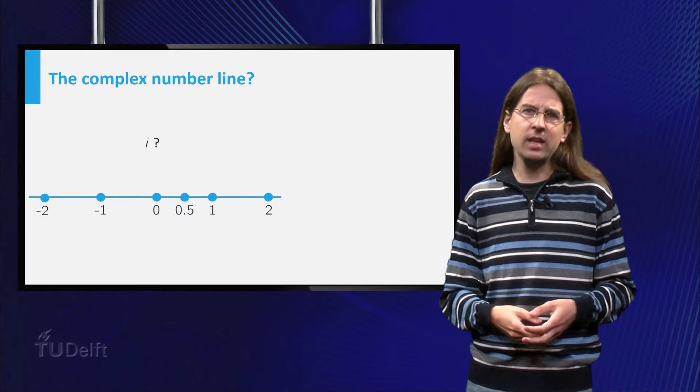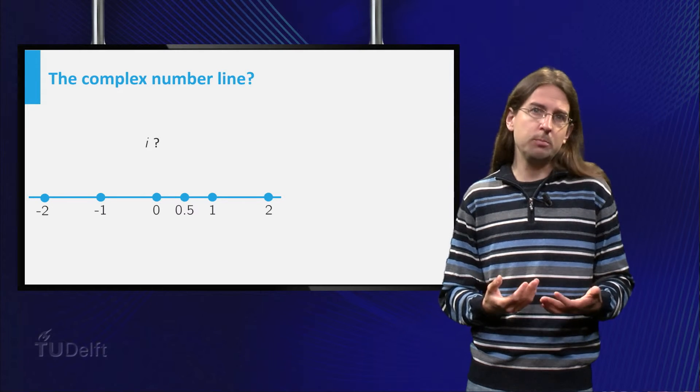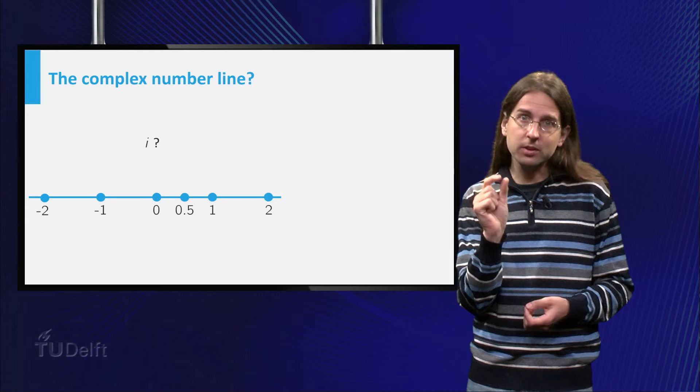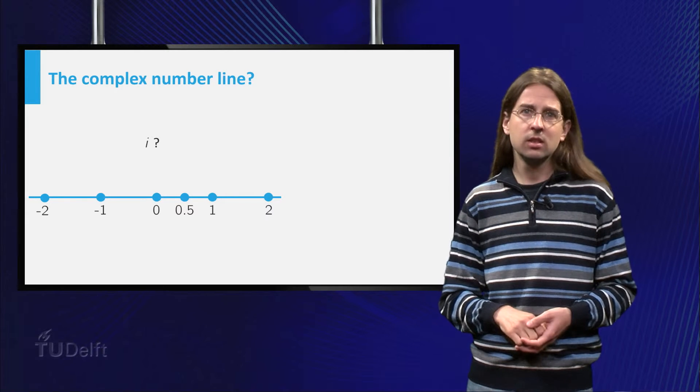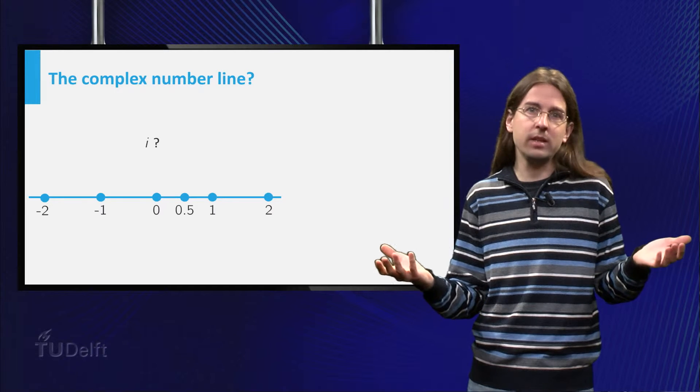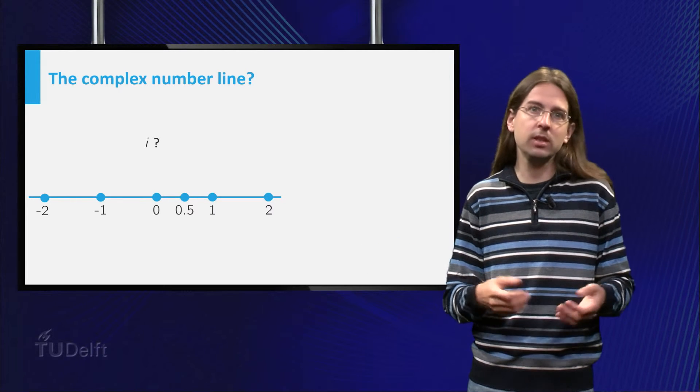But where would you place i? It does not really fit on the line. As you want, for example, that points close together on the line have squares which are also close together. But no point on the number line has a square close to i squared equals minus 1.